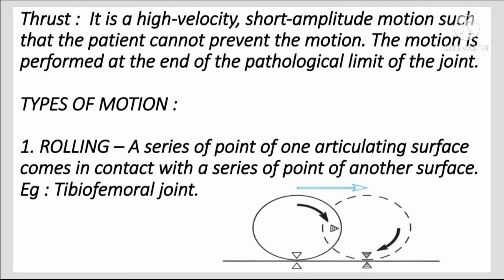Thrust is a high velocity, small amplitude motion such that the patient cannot prevent it. The motion is performed at the end range or pathological limit of the joint — for example, if there is adhesion in the joint, a quick high-velocity, small-amplitude movement is used to break it; that is called a thrust.